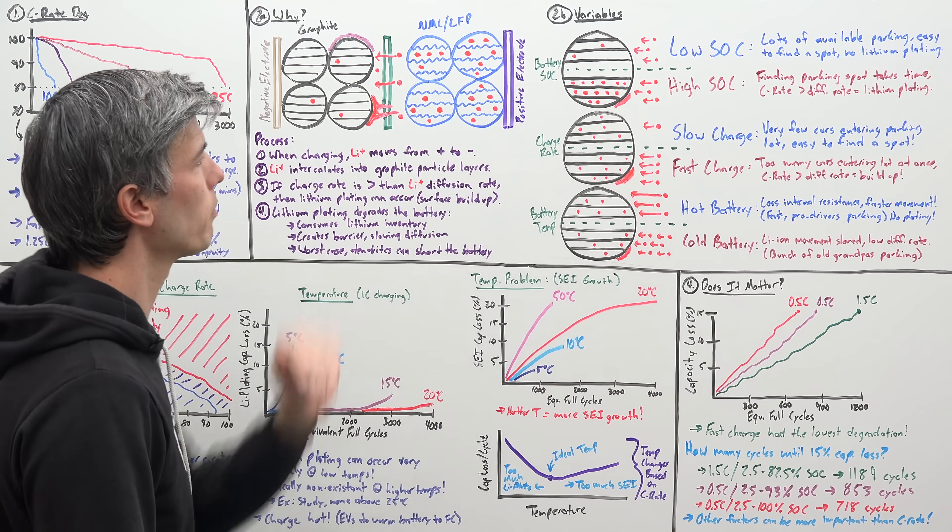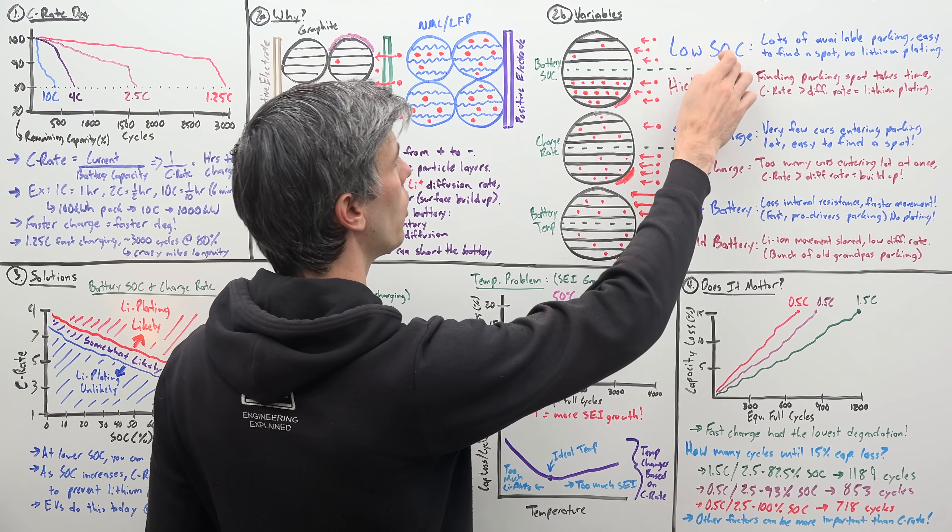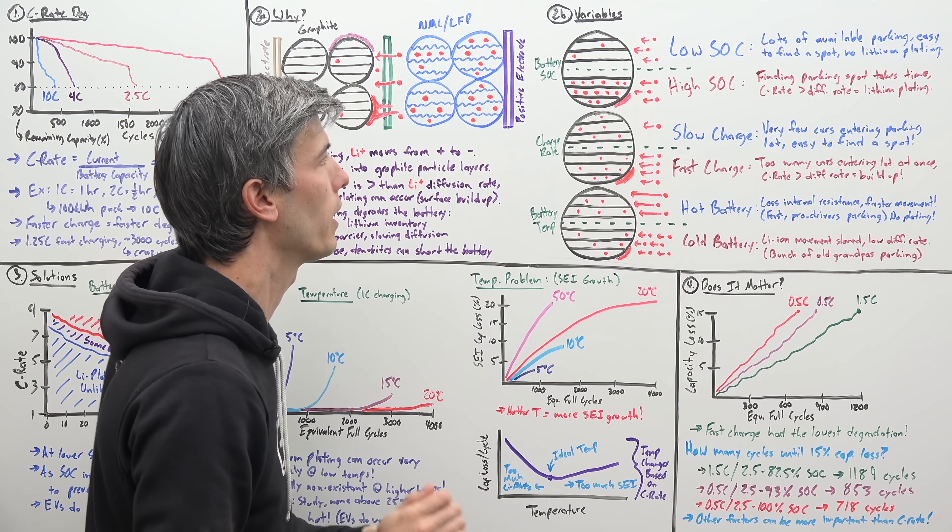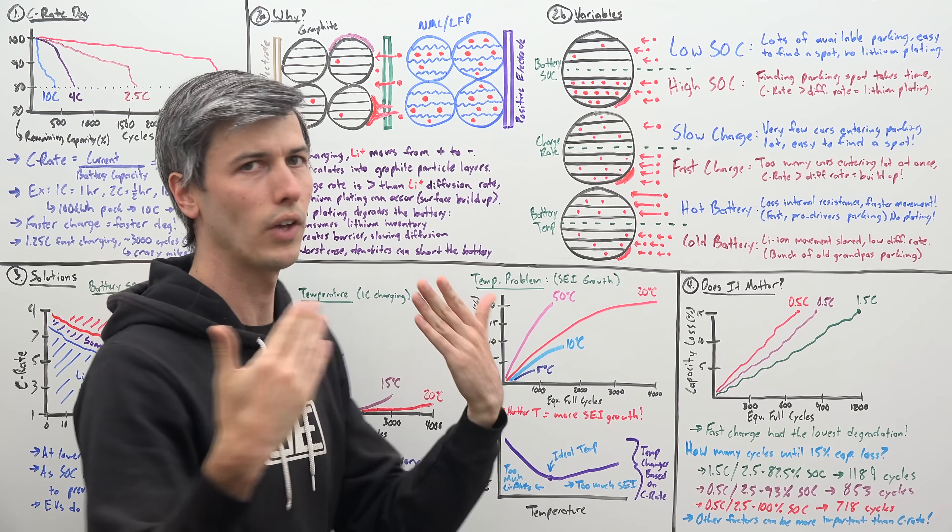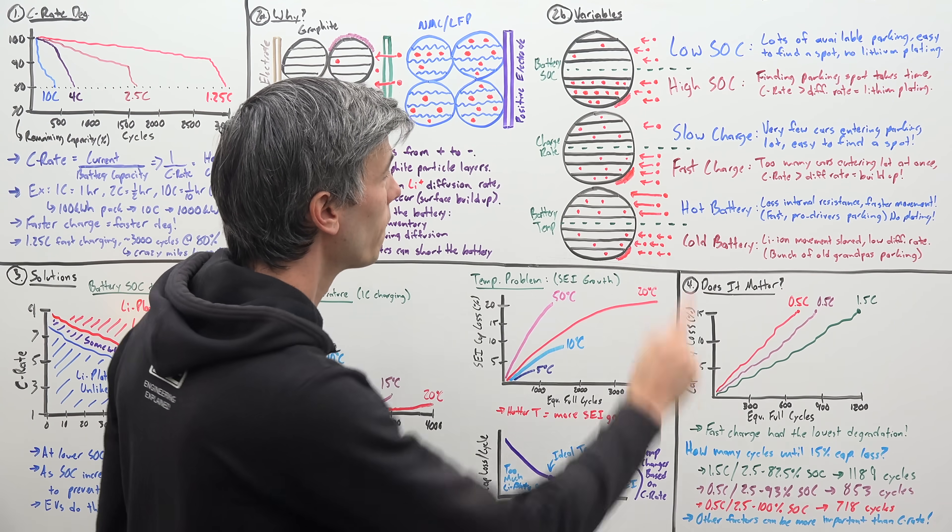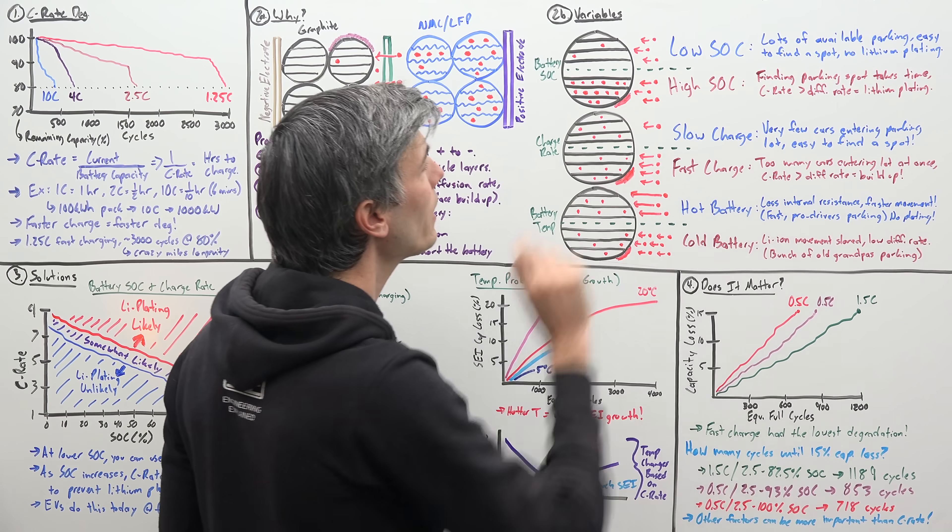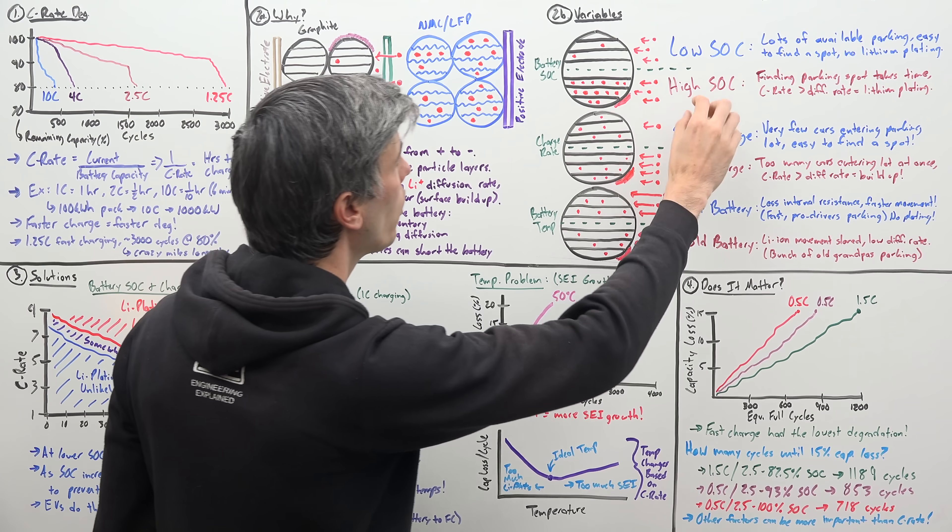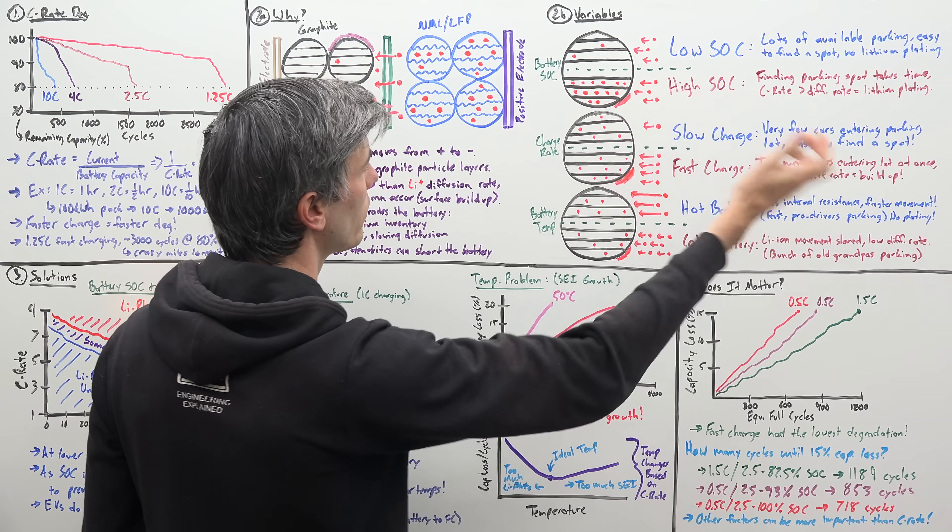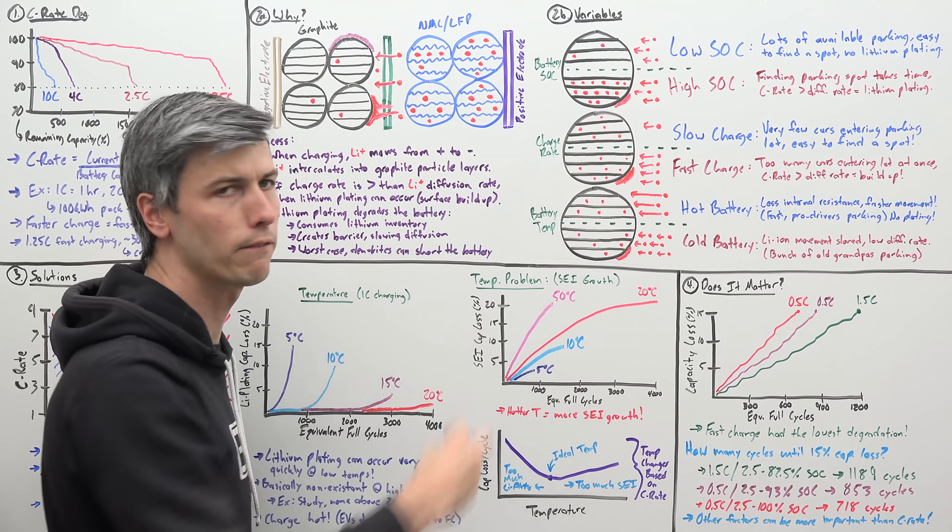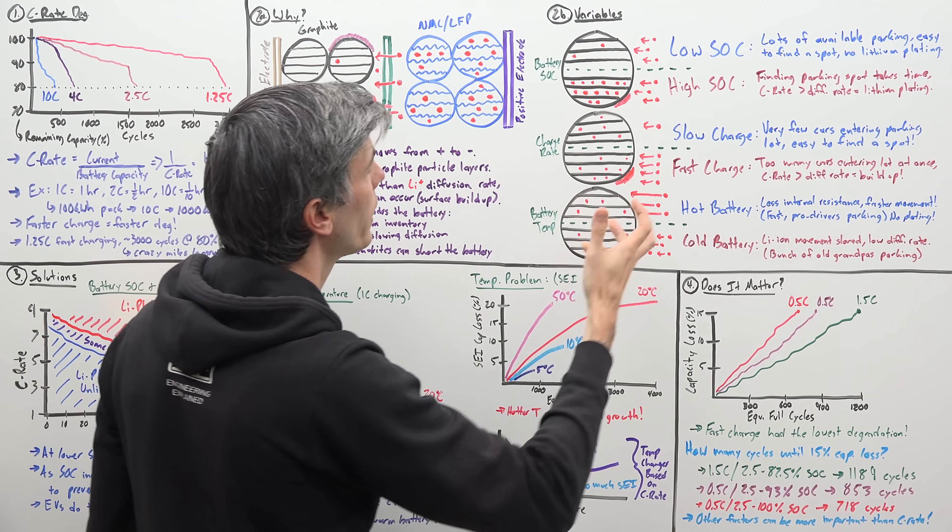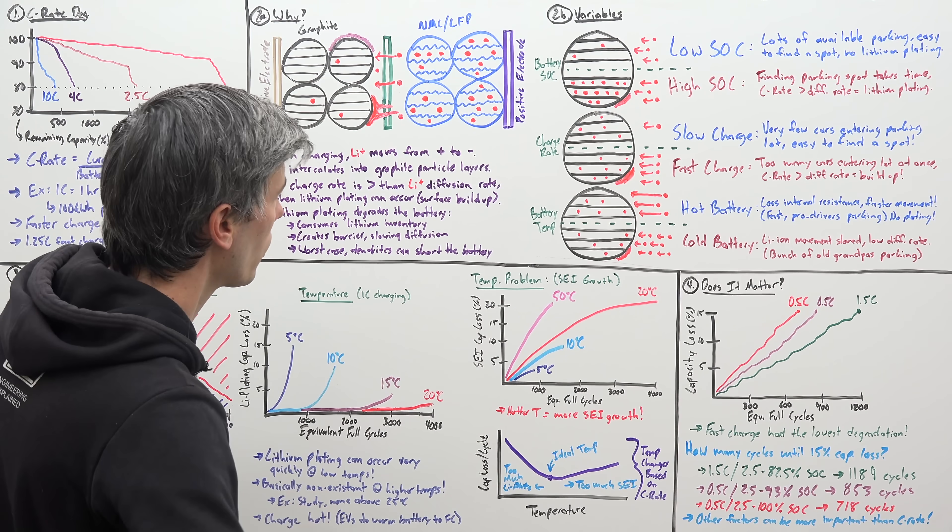So for example, looking at battery state of charge, if we're at a low state of charge, well that means there's a ton of available parking spaces to put these lithium ions. So it's very easy to use a high charge rate, because there's plenty of places to put those lithium ions. Versus, if they're at a high state of charge, well now you've got all of these parking spaces taken up, and you're trying to throw all of these lithium ions into it, and they can't find a space. So they start building up on the exterior, on the outside of that graphite particle, and you have that lithium plating occur.